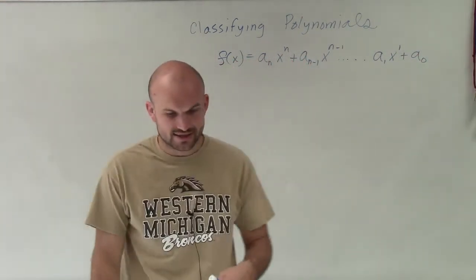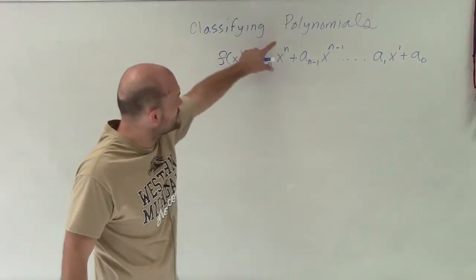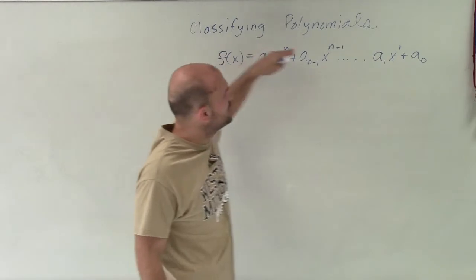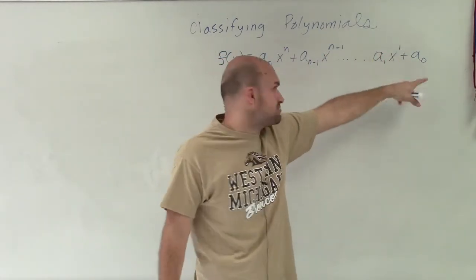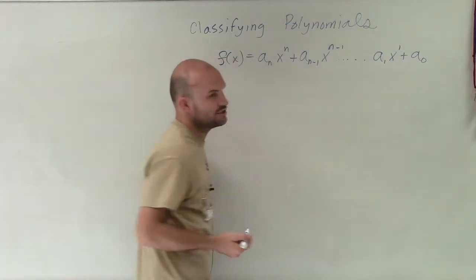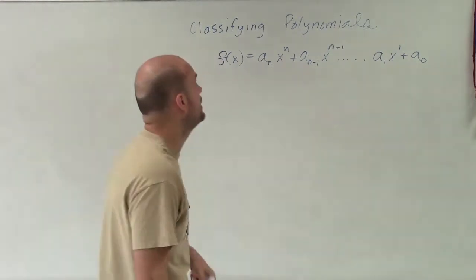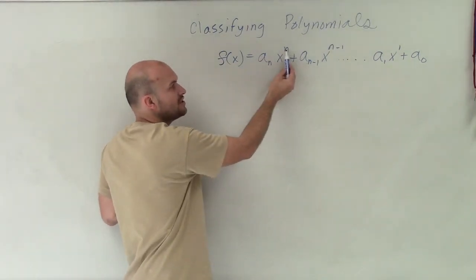So what you can see is when we write a polynomial function in what we call our descending order, we have the largest exponent in front, and then we go down in descending order all the way down till we get x to the 0, which would just be 1, leaving us with a_0. Remember, a_0, that's going to represent our real number, which would be our constant.